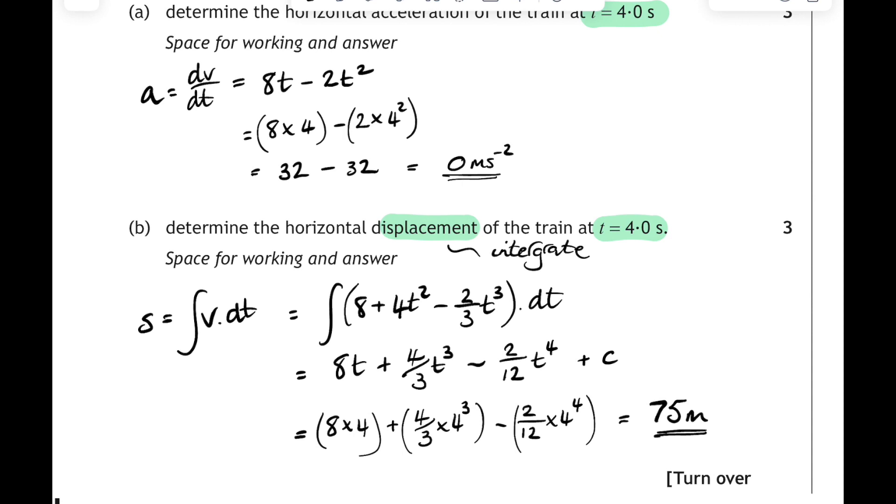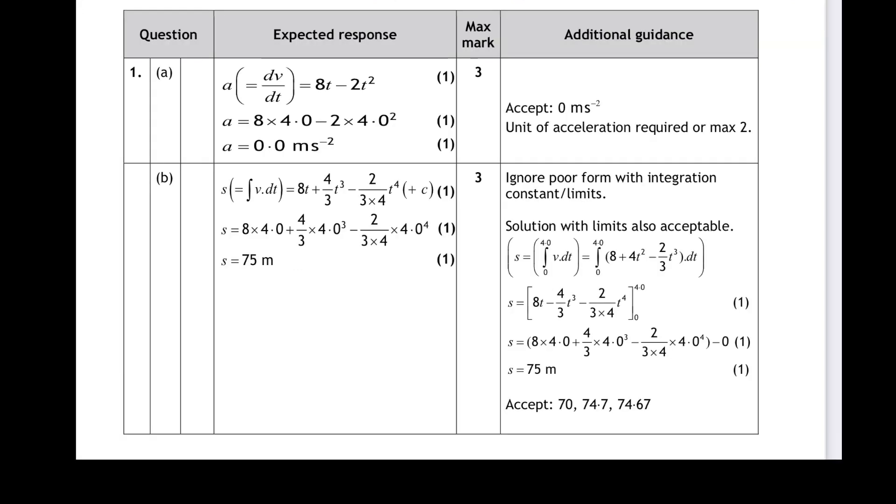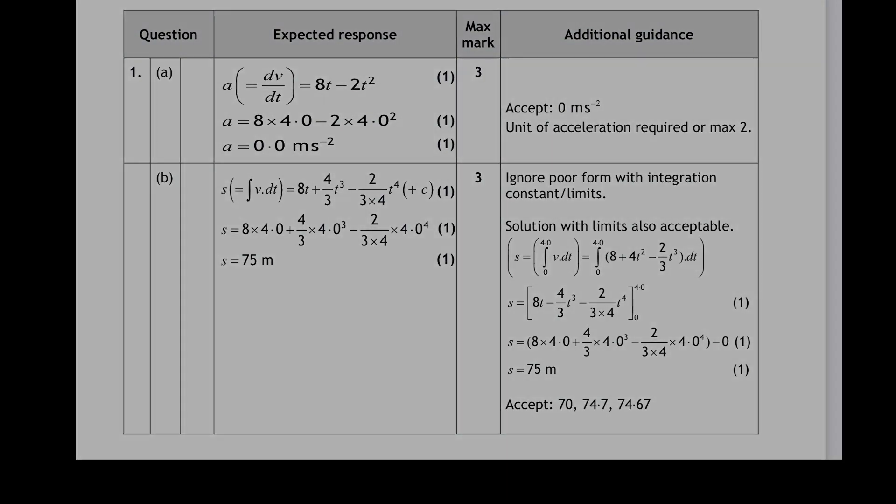Let's have a look at the SQA answers. There it is, 75 meters. And again, on the right-hand side, ignore poor form with integration. So don't worry too much about your calculus notation or your constant of integration or your limits. As long as you can integrate, substitute, and get the final answer with the correct unit, you're good to go. And watch your significant figures as well. Two sig figs in the question, two sig figs in your answer. That's it. That's what question 1 has looked like for about the past 6 years or so. Make sure you go and have a look at some of the other past papers. And in the next video, we'll have a look at some examples from question 2. That's all about rotational motion. I'll see you in the next one.